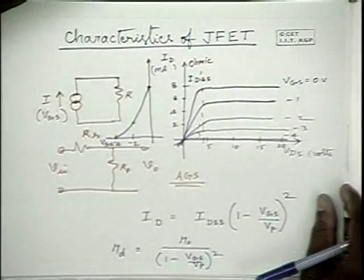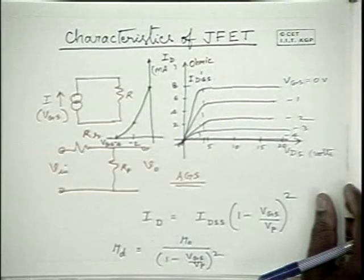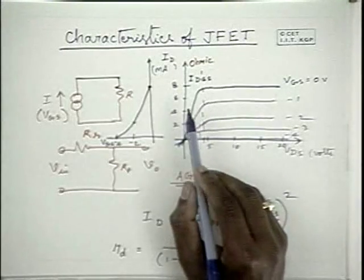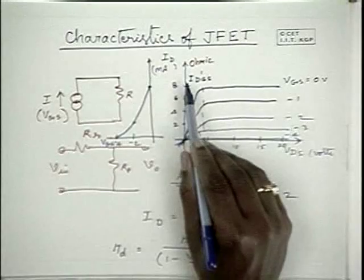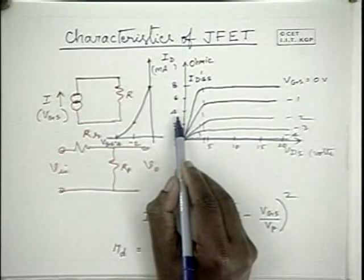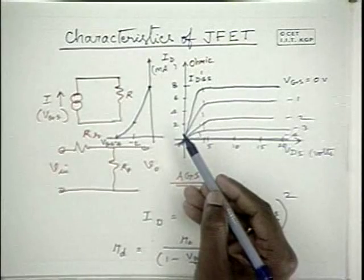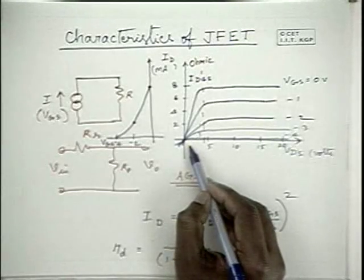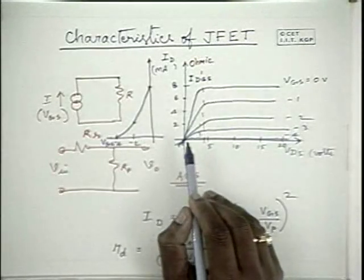Any questions on the characteristics of FET? The question is: for the voltage dependent resistance, what does it depend on — is it VGS or VDS? Please note that the channel itself is acting like a resistance, and the voltage applied across the channel is VDS and the current flowing is ID. Between drain and source it acts like a resistance, but there is a third terminal potential whose potential decides the value of the slope. Therefore, VGS decides the resistance of the channel.